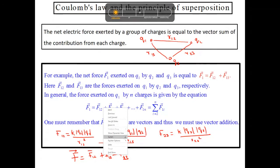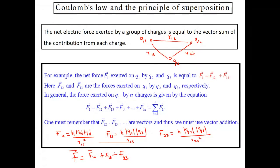The resultant force F equals F12 + F13 + F23. Likewise, for n number of charges you use the same approach. The net electrostatic force exerted by a group of charges equals the vector sum of all individual forces between each pair of charges.